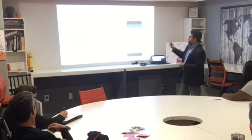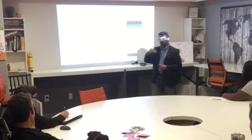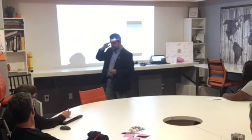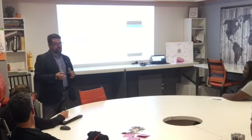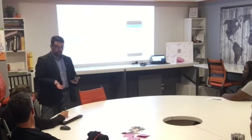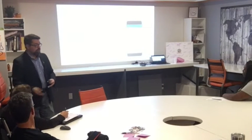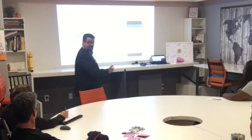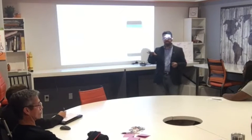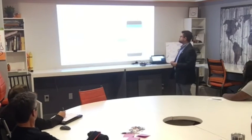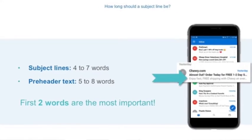Preheader text gives you a little more wiggle room — about five to eight words. When writing preheader text, it's wise to either have it support your subject line by explaining what the email is about, or to tease people to open the email. And remember: the first two words are the key words — that's what the eye notices first.